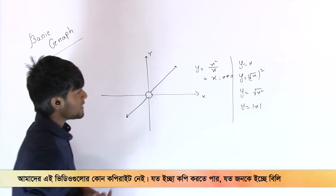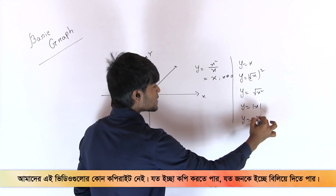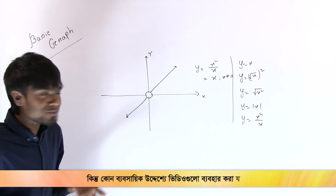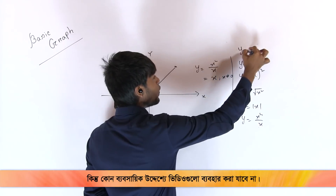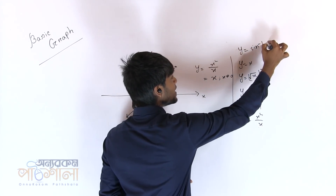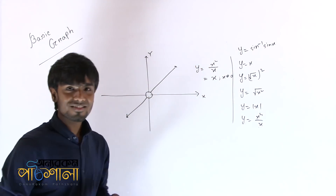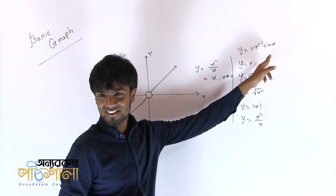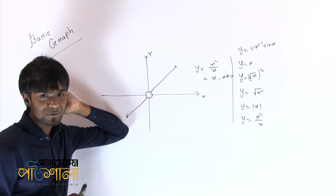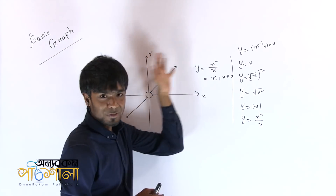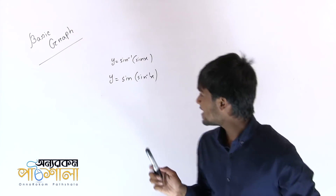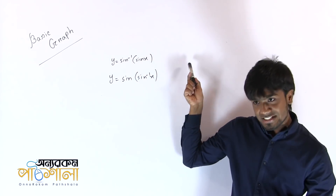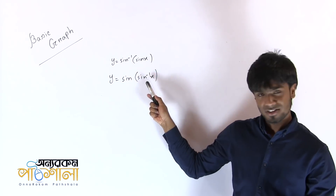Okay, so now we have y equals x squared divided by x, and x is equal to x. Now we can ask you: y equals sin inverse sin x. So we can say that x is equal to x. Let's see x is equal to x. We have y equals sin inverse of sin x, or y equals cos sin inverse x.